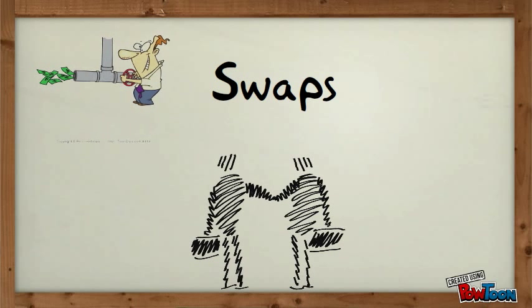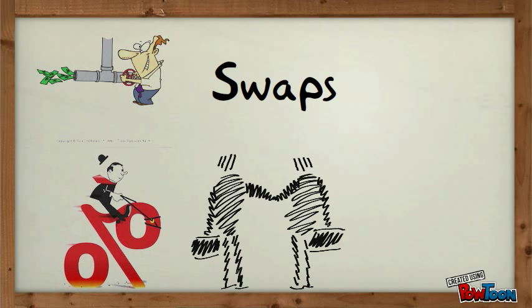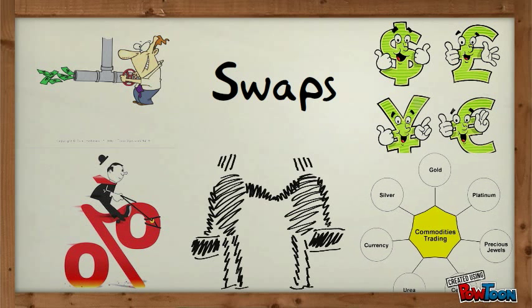Swaps are private agreements between two parties to exchange cash flows or other variables associated with different investments in the future, according to a prearranged formula. Many times, a swap will occur because one party has a competitive advantage in one area, such as borrowing funds under variable interest rates, while another party can borrow more freely at a fixed rate. The three most commonly used swaps are interest rate swaps, currency swaps and commodity swaps.